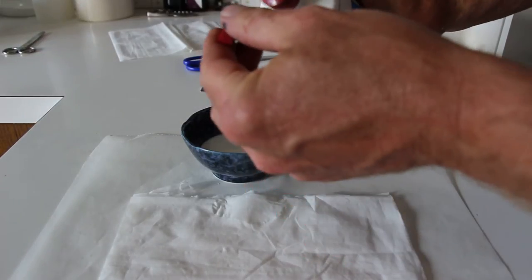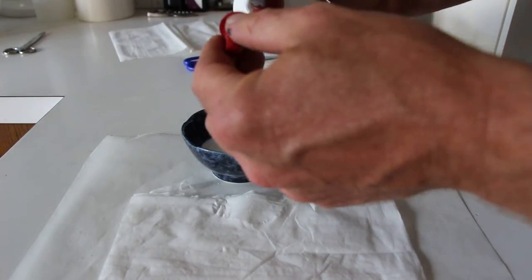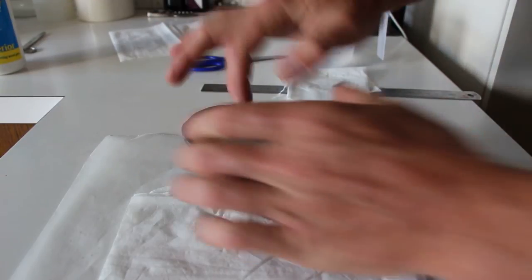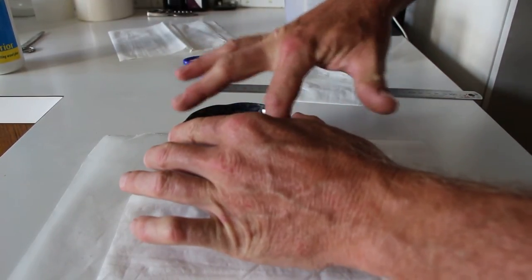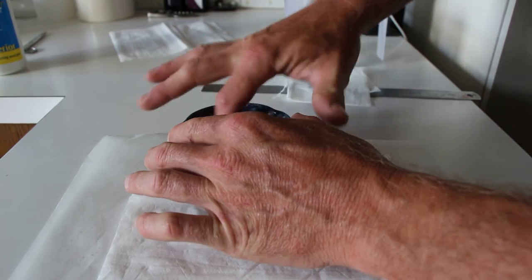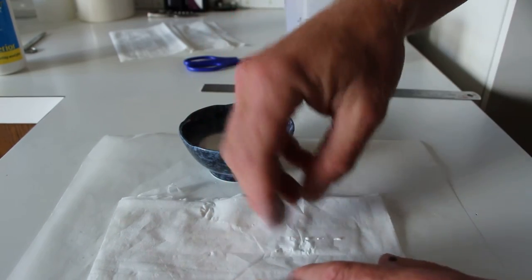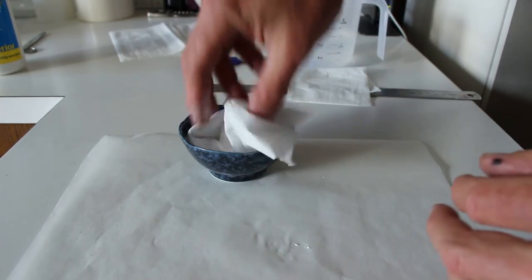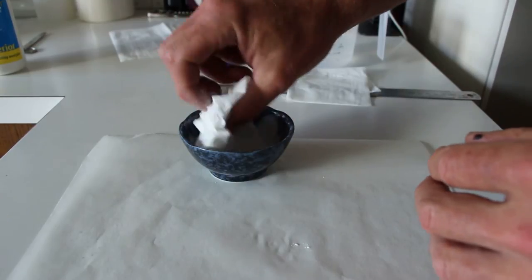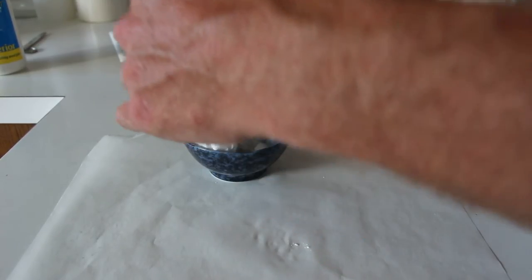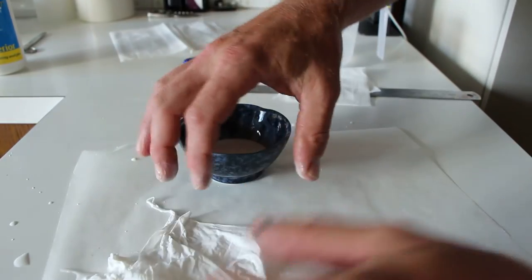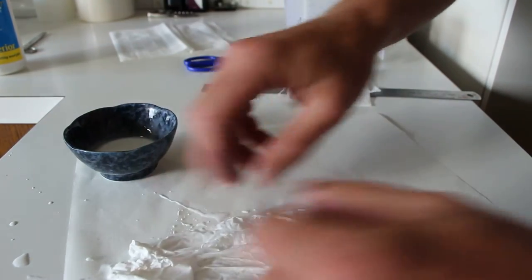Once the PVA glue mix has gone into the tissue, it's just a case of rolling the tissue up in the desired shape. Pretty much straight away you'll get the wrinkly effect that you're after.